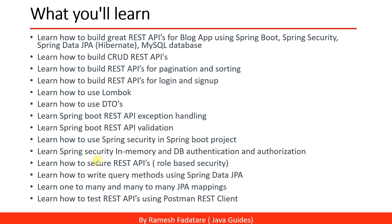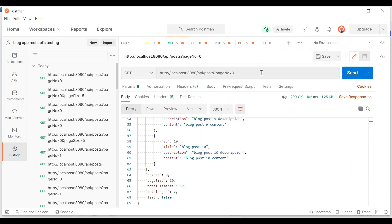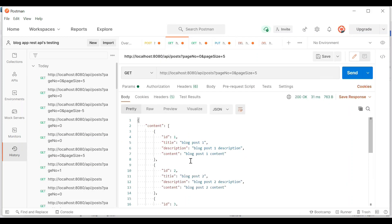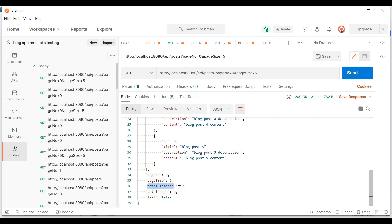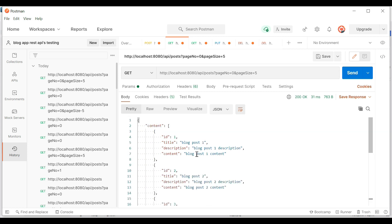You will also learn how to secure REST APIs using Spring Security. We are going to use role-based security to secure REST APIs. You will learn how to write query methods using Spring Data JPA, and one-to-many and many-to-many JPA mappings. You will learn how to test REST APIs using the Postman REST client, and I am confident we will get great hands-on experience building REST APIs with Spring Boot.